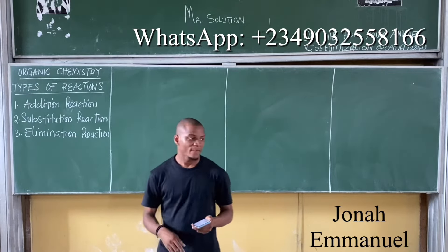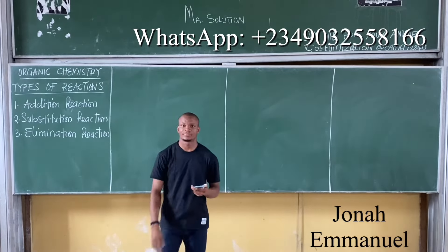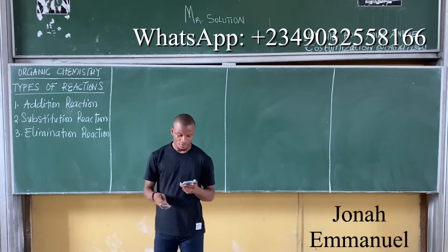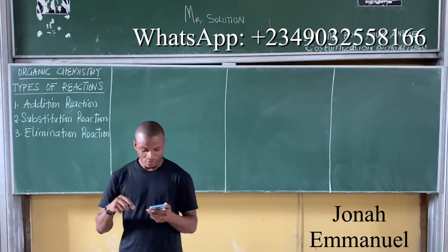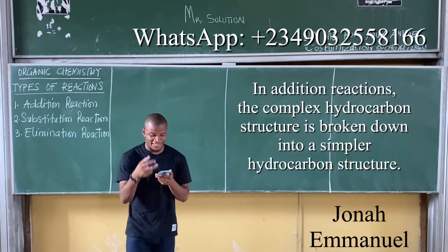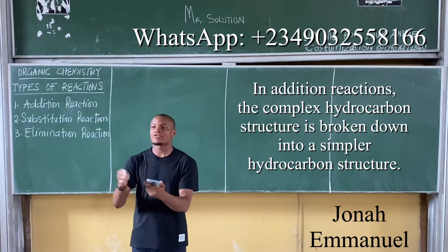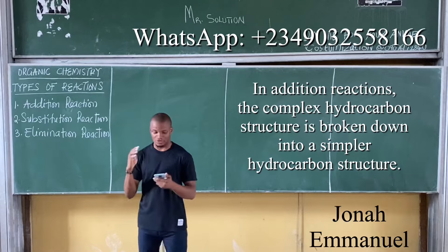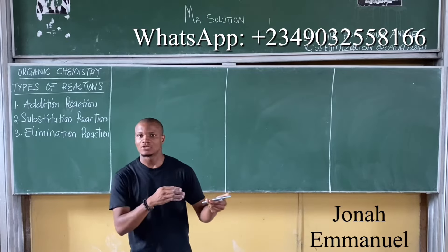For addition reaction: the complex hydrocarbon structure is broken down to a simpler hydrocarbon structure. How to identify this? It changes from a complex to a simpler hydrocarbon.